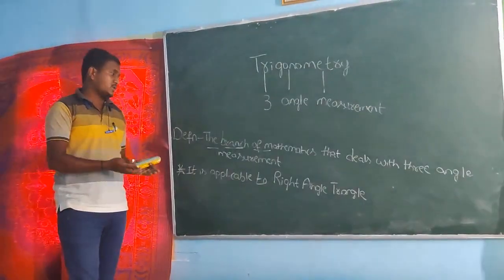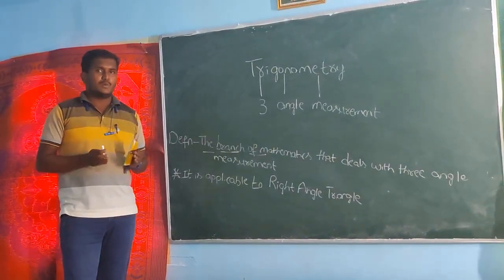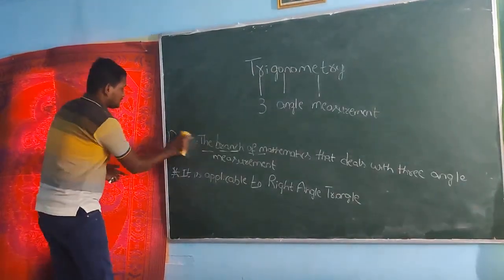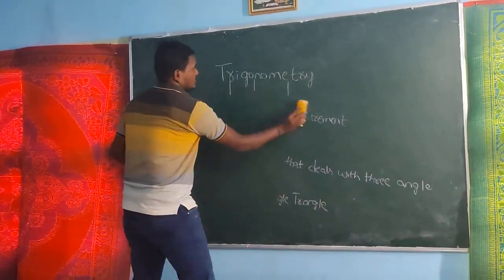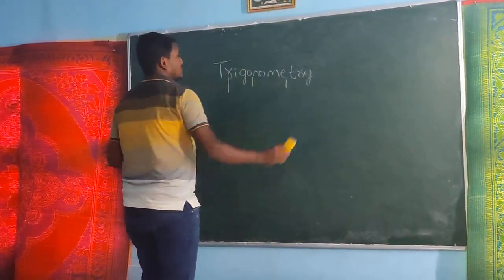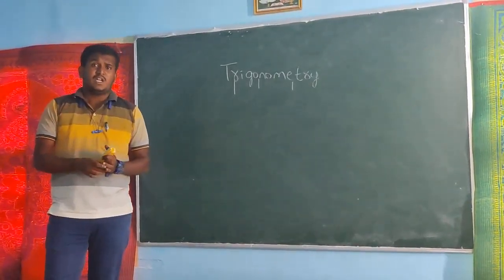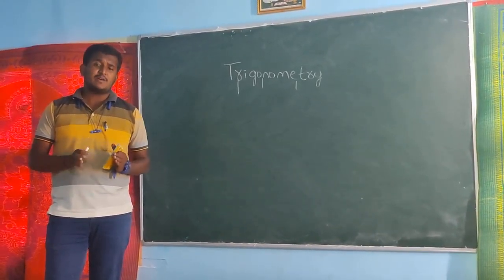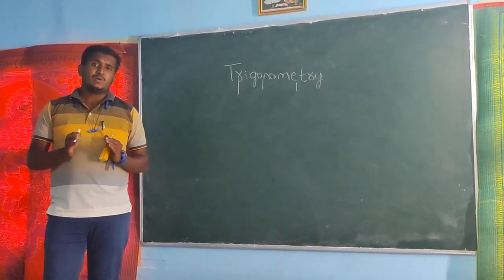To further proceed, we have to go about the right angle triangle. In the previous classes, you may know about the right angle triangle, but I will once again explain it. A right angle triangle is a triangle whose one angle is equal to 90 degrees, and the sum of the other two angles is also equal to 90 degrees.